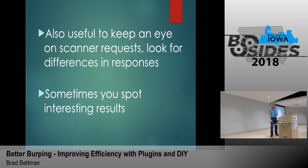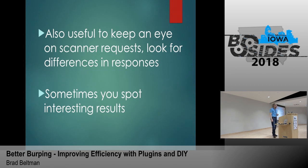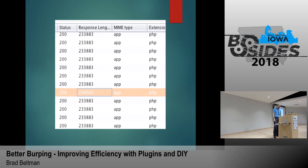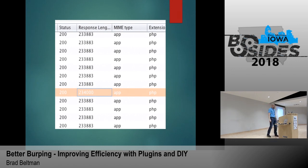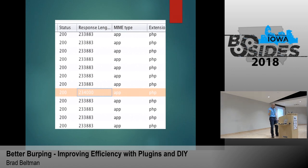I also like to use Logger++ to keep an eye on things as I'm running automated tools like Nikto through Burp. As you watch the requests go through, you can spot differences in responses. Sometimes you can spot interesting behavior that the automated tool doesn't flag. Here's an example where the response length is the same throughout, and then all of a sudden one of them is a little bit different — not necessarily a vulnerability, but definitely something interesting worth investigating.